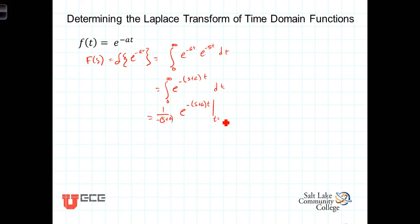at t at the lower limit which is 0 and the upper limit which is infinity. So we have then out here in front negative 1 over s plus a times, let's go through the details here one time.